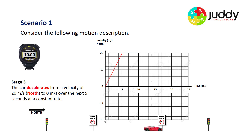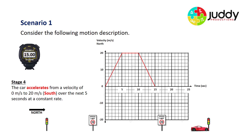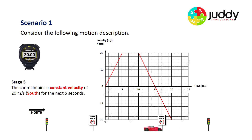Stage three: the car decelerates from a velocity of 20 meters per second north to zero meters per second over the next five seconds at a constant rate. We'll see our car slow down to the traffic lights. Stage four: the car accelerates from a velocity of zero to 20 meters per second south over the next five seconds at a constant rate. We've been traveling north; we're now going to travel south, starting slow and speeding up. Stage five: the car maintains a constant velocity of 20 meters per second south for the next five seconds.